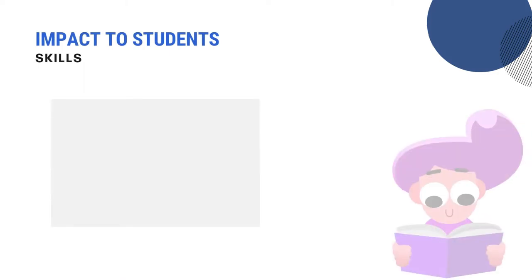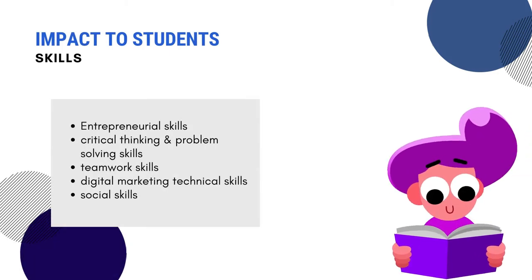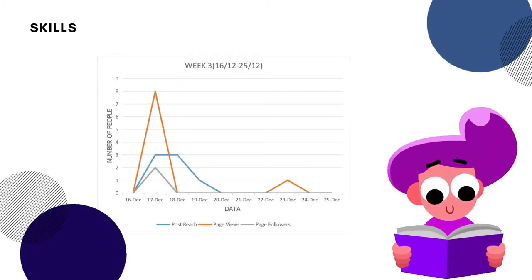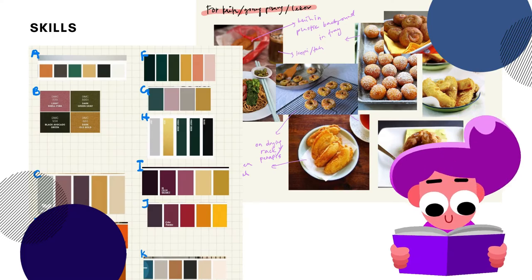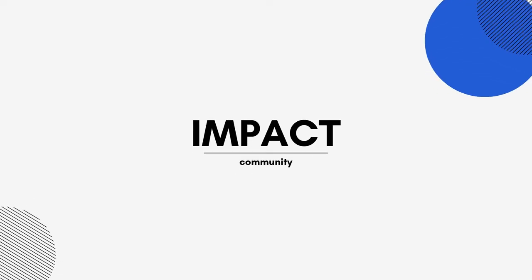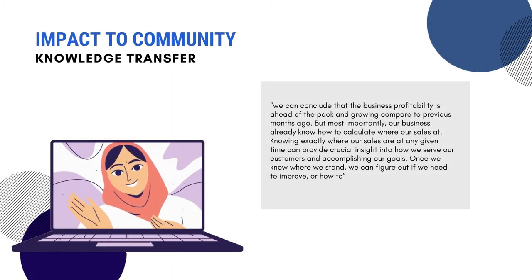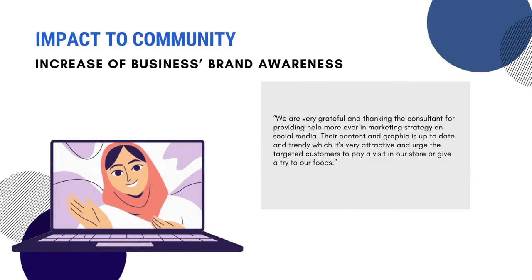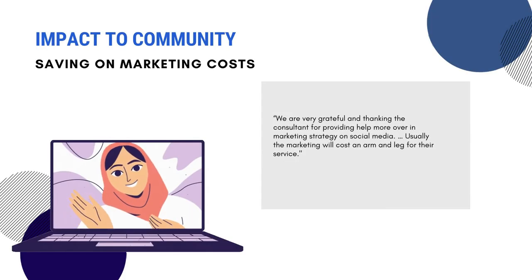The project emphasizes learning through relevant real-world experiences, successfully enhancing entrepreneurial skills, critical thinking and problem-solving skills, teamwork skills, and social skills. The project also impacted the local business by providing an opportunity to transfer entrepreneurial and digital marketing knowledge and skills to the owner of Moist Kitchen, increasing business brand awareness, and saving marketing costs.